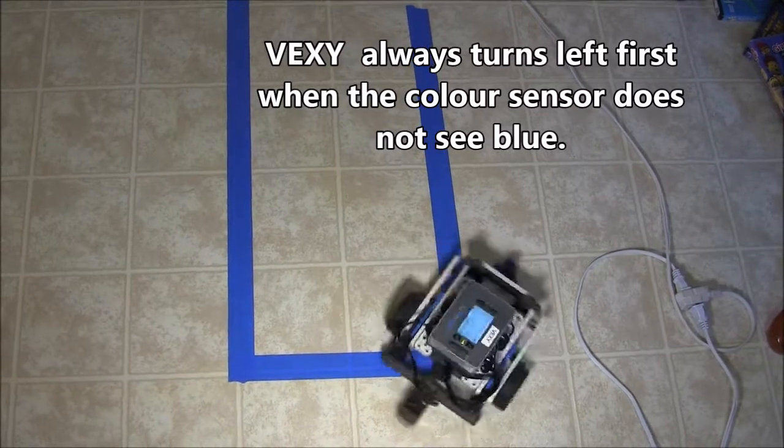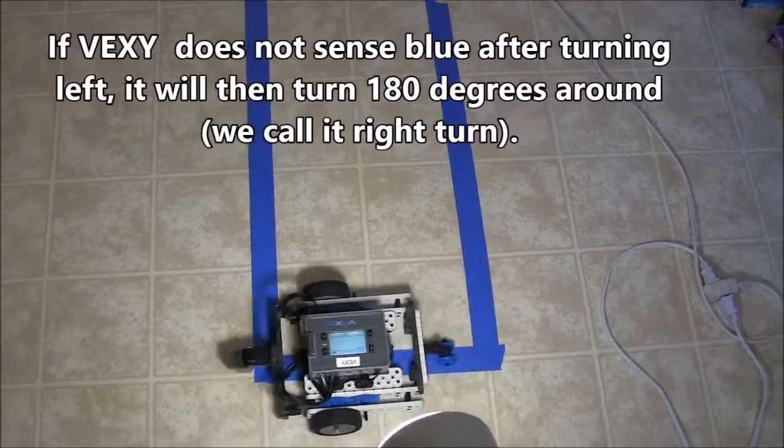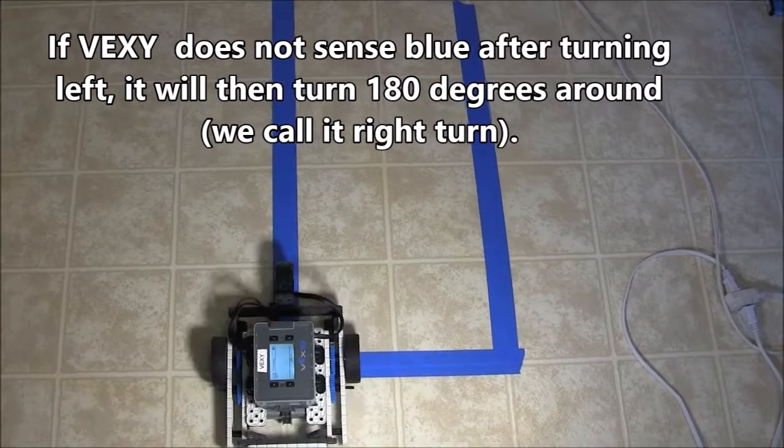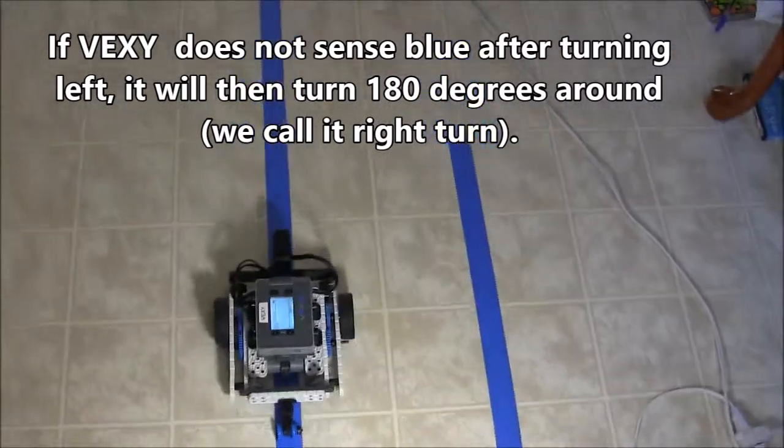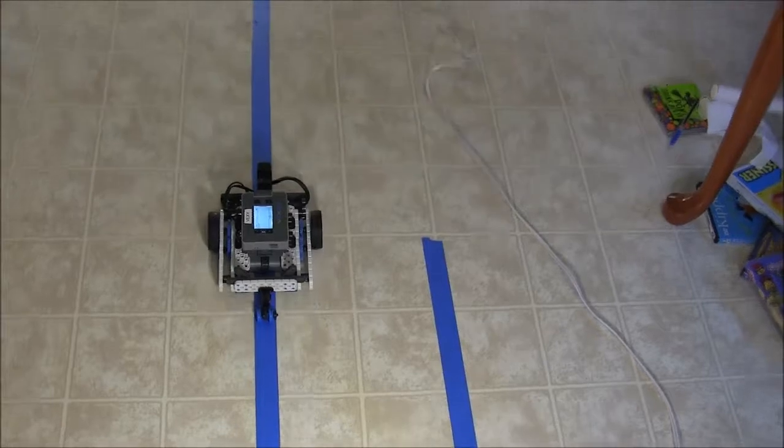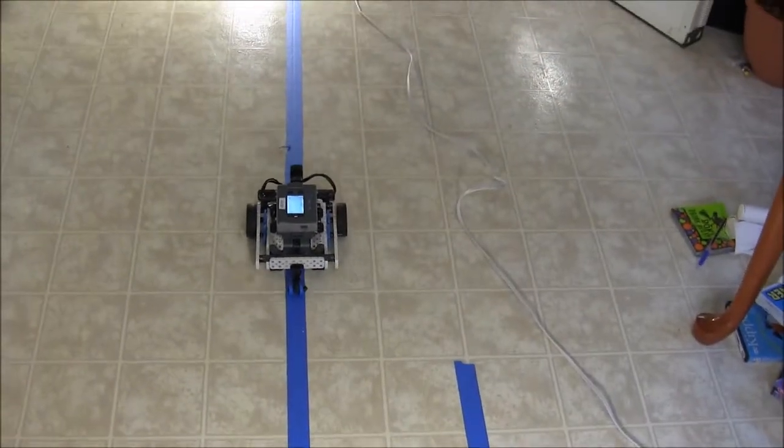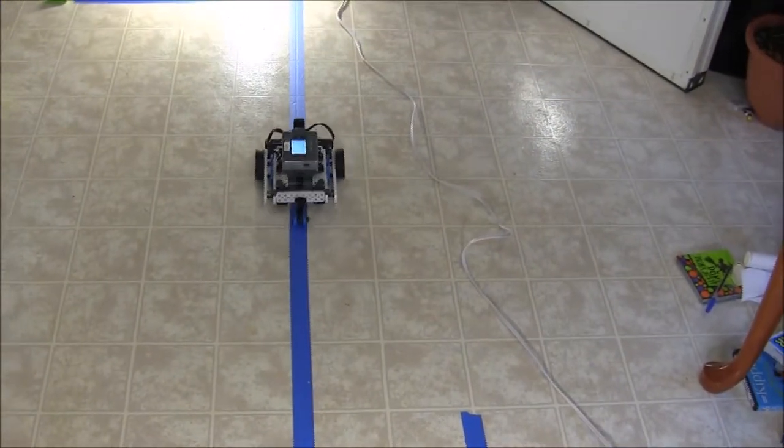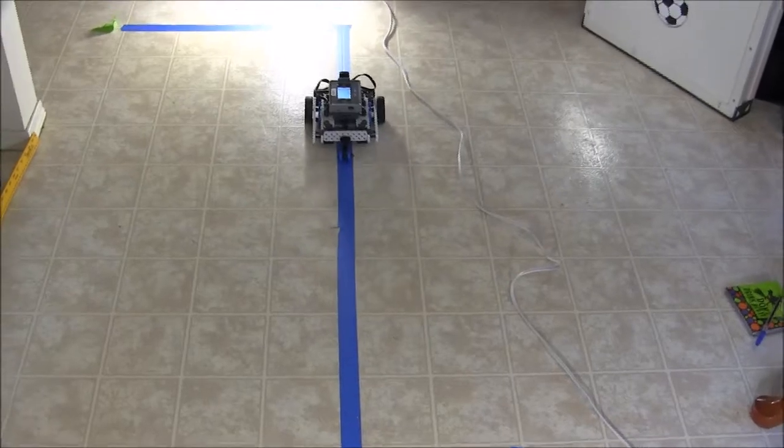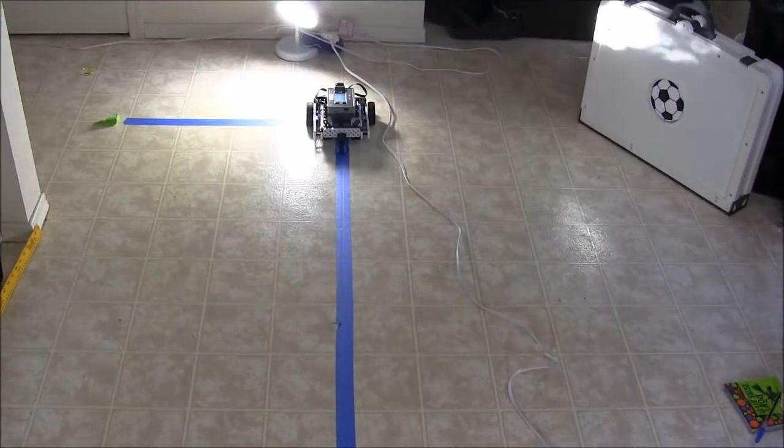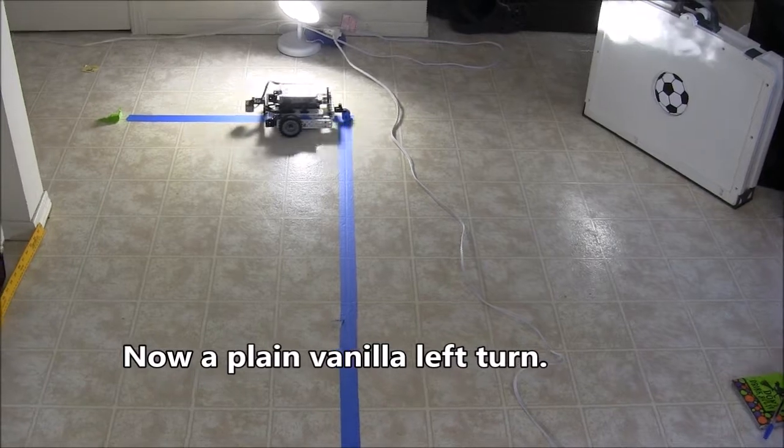He's been programmed to turn and keep following the line. All lines are at right angles or 90 degrees. There are no curves, so this program only relies on changes of 90 or 180 degrees when it's making its turns. Otherwise, it'll go forward if the line goes forward.